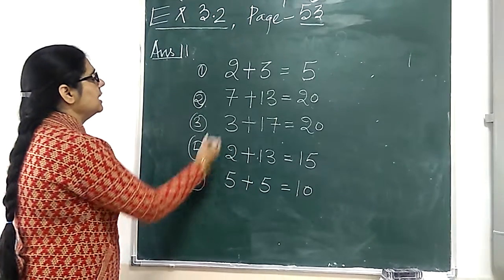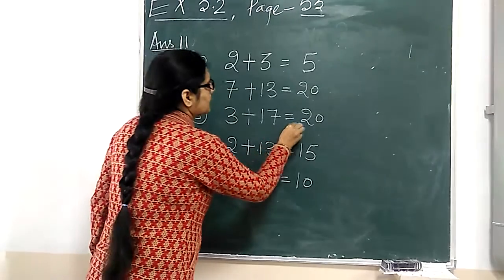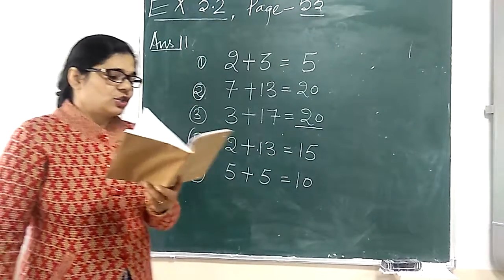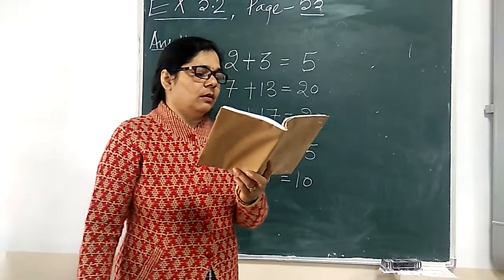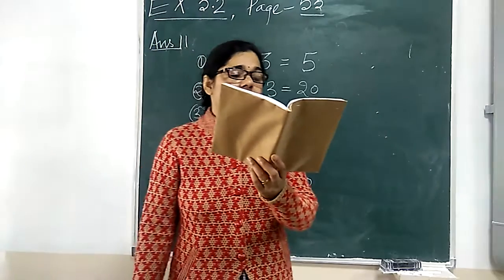Now, we have 5 pairs less than 20, which sum is divisible by 5. Now, question number 12. Now, question number 12, a part is,